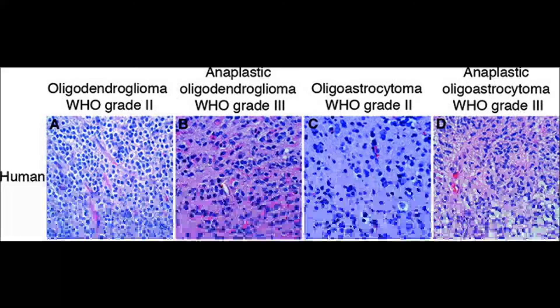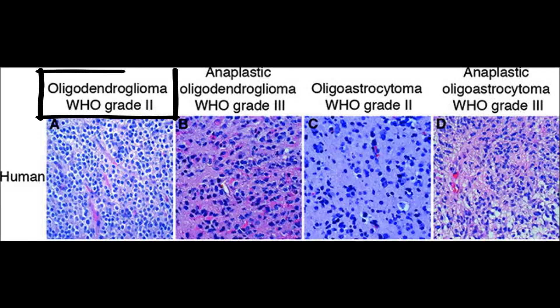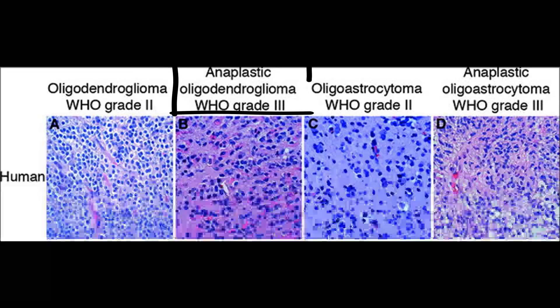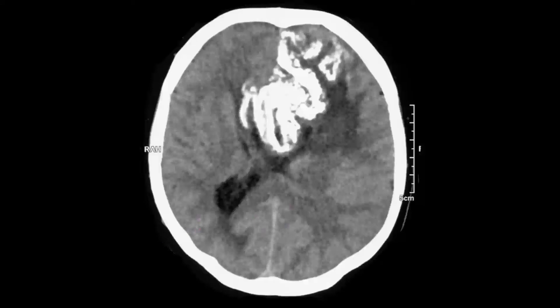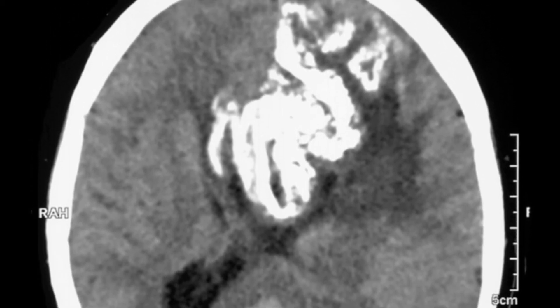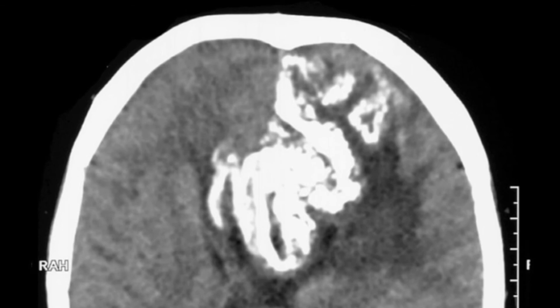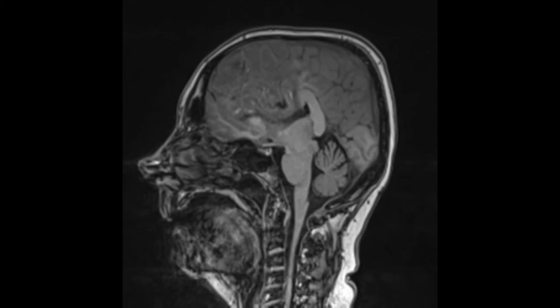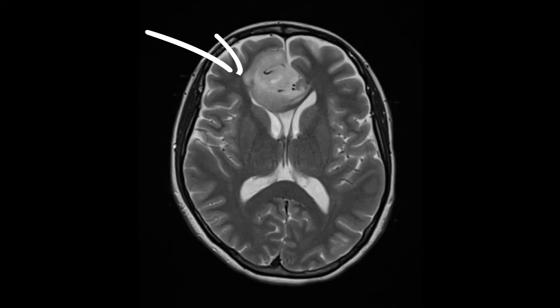Moving on to oligodendrogliomas — the cells that make up myelin. You have only two grades: grade 2, which is normal oligodendroglioma, and grade 3, which is anaplastic. They frequently occur with calcifications, so you can see them on CT. Here you can see the tumour has invaded the corpus callosum. Here is an MRI T1 weighted image — you can see the corpus callosum has been invaded — and here is the T2 weighted image of the same tumour.